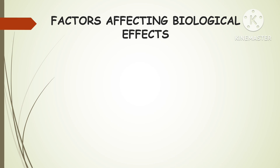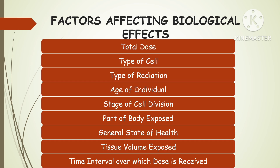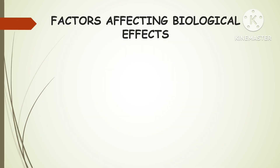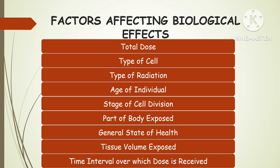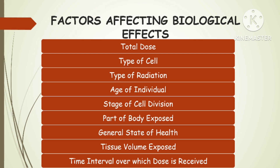Now we have reached the final segment of the video, discussing factors affecting the biological effects of radiations. Several factors influence the severity and type of radiation effects, including dose — the amount of radiation absorbed — the rate of exposure, meaning how quickly the radiation dose is delivered. The type of radiation — alpha, beta, gamma, or neutron — have different properties and different effects on biological tissues.